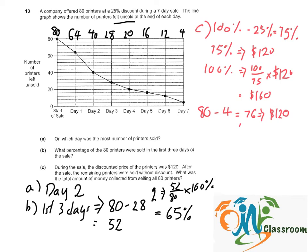And there are four remaining printers that were eventually sold without any discount, which is $160. So the total amount collected would be 76 times $120 plus 4 times $160. That will give us $9,760.